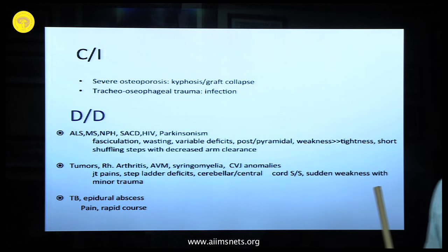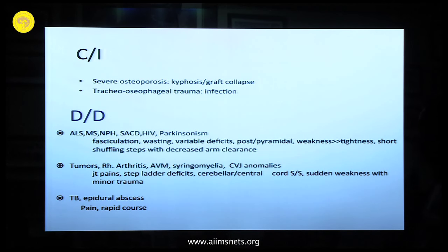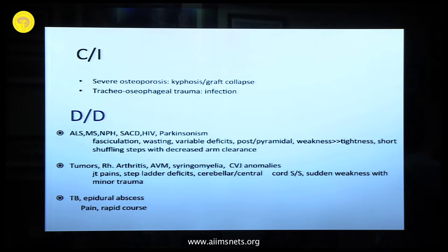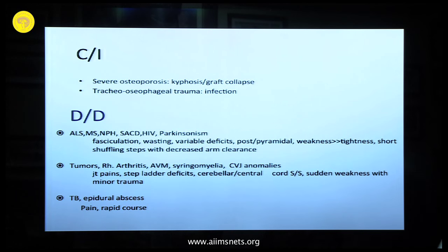Red herrings include: fasciculations, disproportionate wasting, weakness much more than tightness — these are red herrings. Very importantly, hundreds of patients present with short shuffling steps with less arm clearance and asymmetry. Always look at arm clearance. A patient with cervical spondylosis will not have difficulty in arm clearance unless there is weakness of the arms. Decreased arm clearance with short shuffling steps — gait is not only lower limbs, it is also upper limbs.